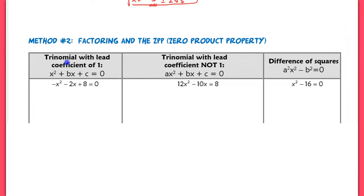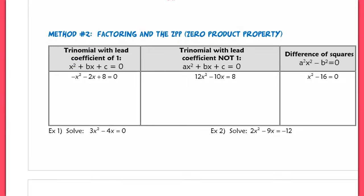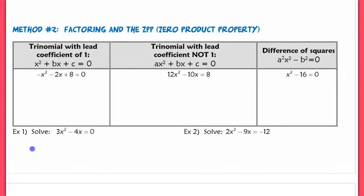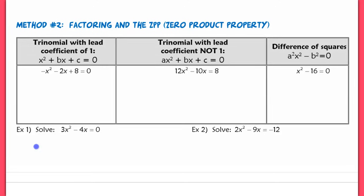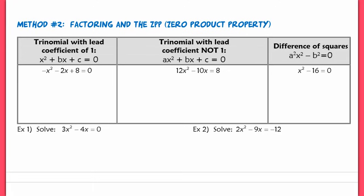Moving on to method 2 — we are going to be factoring and using the zero product property in order to solve. We talked about ZPP already at the beginning of the year, so this is a lot of review. The only type of problem that's going to be different is the difference of squares.